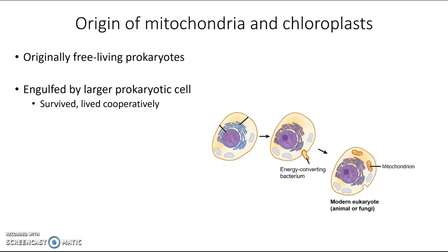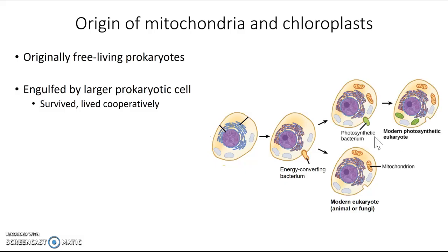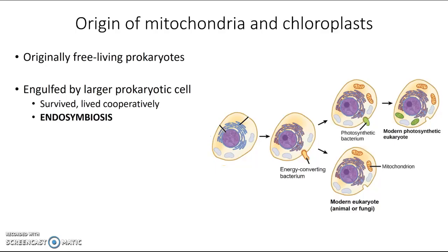We think something similar happened for chloroplasts, where a photosynthetic bacterium got engulfed by a larger cell, didn't get broken down for food, survived and persisted, and then kept getting passed down until we ended up with a modern photosynthetic eukaryotic cell. This process by which a smaller cell gets engulfed and ends up living symbiotically inside a larger cell is known as endosymbiosis — endo means inside, symbiosis means living together — and we think this is where mitochondria and chloroplasts came from.